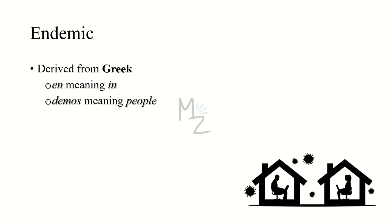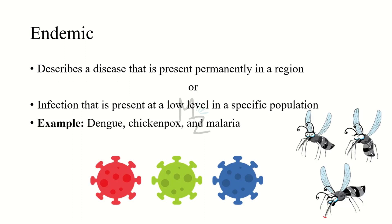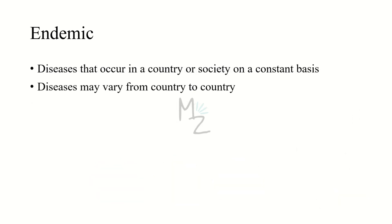Endemic is a word derived from Greek, composed of two parts: 'en,' meaning 'in,' and 'demos,' meaning 'people.' Endemic describes a disease that is present permanently in a region, or an infection present at a low level in a specific population — for example, dengue, chickenpox, and malaria. These diseases occur in a country or society on a constant basis, and may vary from country to country. An infection endemic in China may not be endemic in Korea, and one endemic in Korea may not be endemic in America.